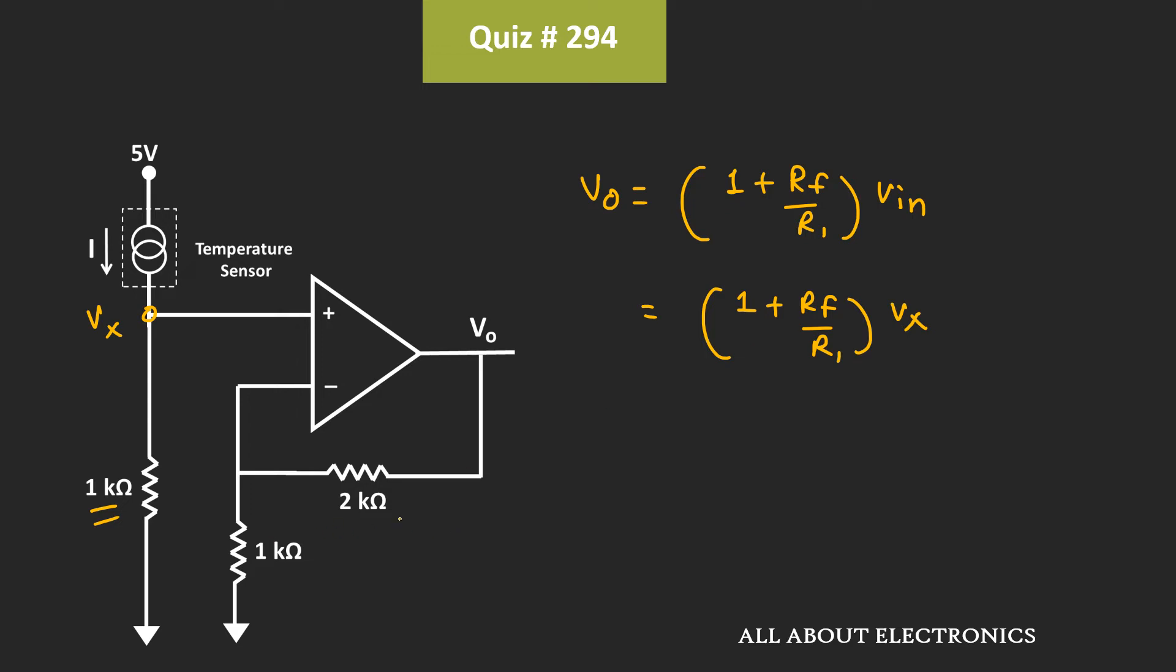So in this case, this Rf is equal to 2 kΩ while the R1 is equal to 1 kΩ. So, from this we can say that, Vout is equal to 1 plus 2 kΩ divided by 1 kΩ times Vx. That means, Vout is equal to 3 times Vx.